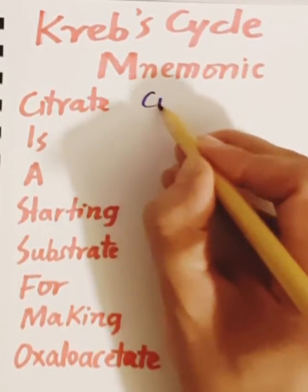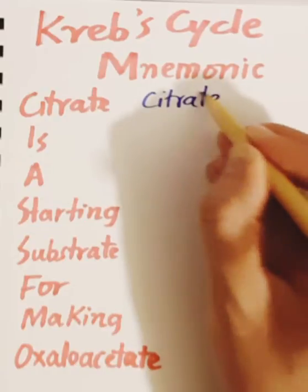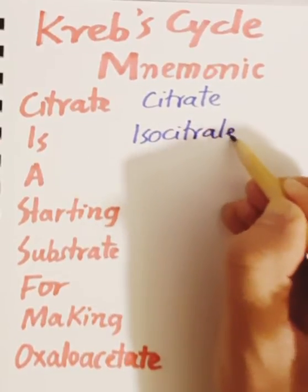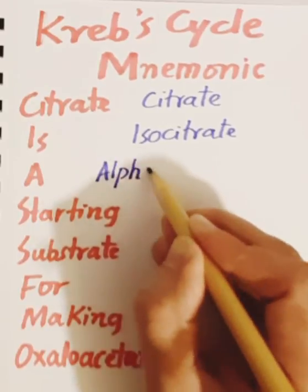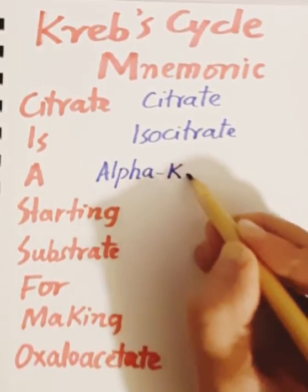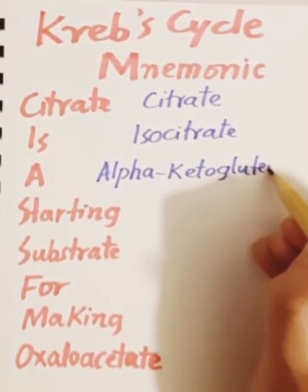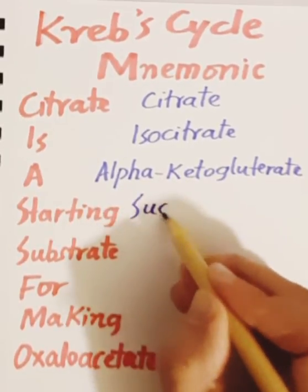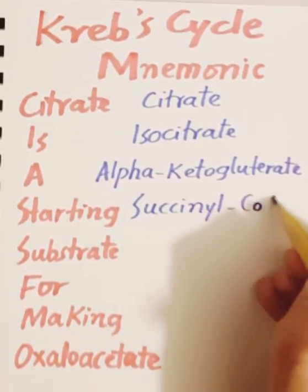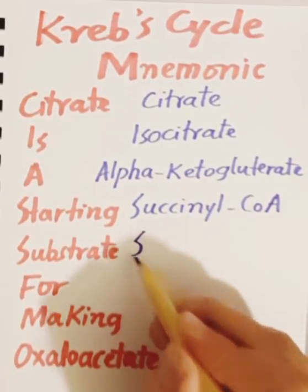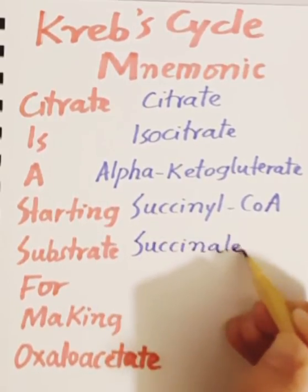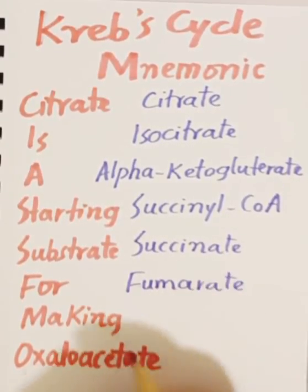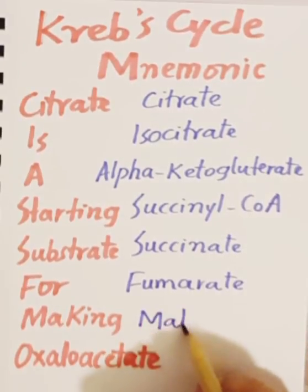The first product that is made is Citrate. After that, Isocitrate, then alpha-ketoglutarate, then Succinyl-CoA, then succinate, which ultimately forms fumarate, leading to the production of malate.